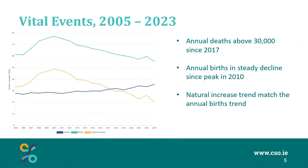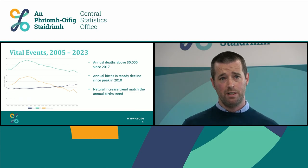Looking at the annual birth trend, you can see that there was a peak in annual births in 2010 and there has been a steady decline since then, apart from one increase between 2021 and 2022, and we are back down to a downward trend from 2022 to 2023. The natural increase trend in yellow matches the annual birth trend, so we have a peak in 2010 and a decline since then.